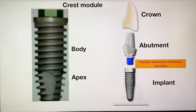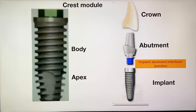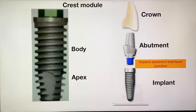We will first see the design of the implant. The implant is divided into an apical portion and a body. This is the apex, this is the body of the implant, and the upper portion at the crest is the crest module. In the second diagram, you will see the implant. The abutment is placed over the implant, and over the abutment there is placement of a crown. The junction between the implant and the abutment is the implant-abutment junction or implant-abutment interface. When the abutment and implant are fused to each other, that is a one-piece implant; and when they are not fused, that is a two-piece implant.